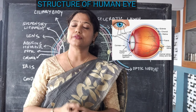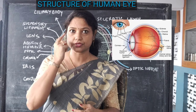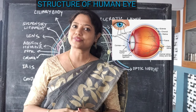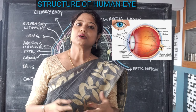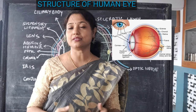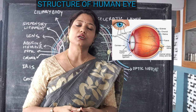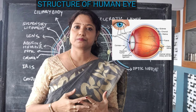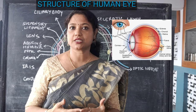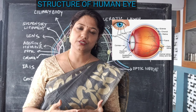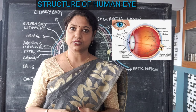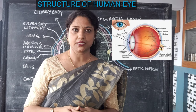Then we have eyebrows. These eyebrows are not directly a part of the eye, but still they are considered to be a part which is protective in function and it is related to our eyes.